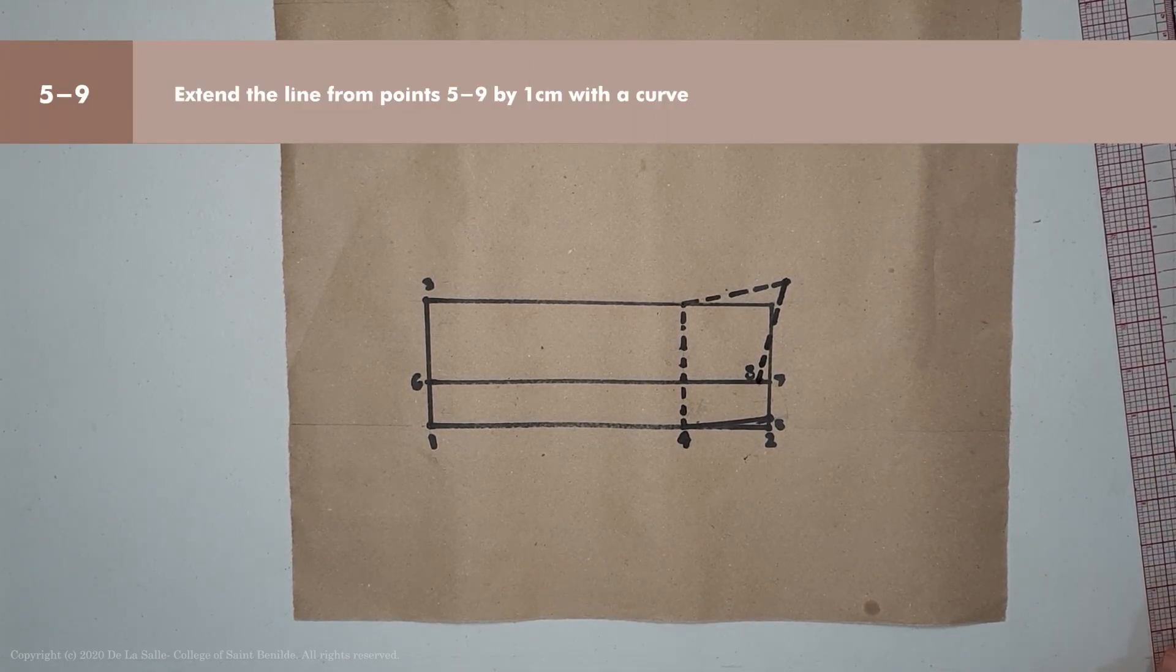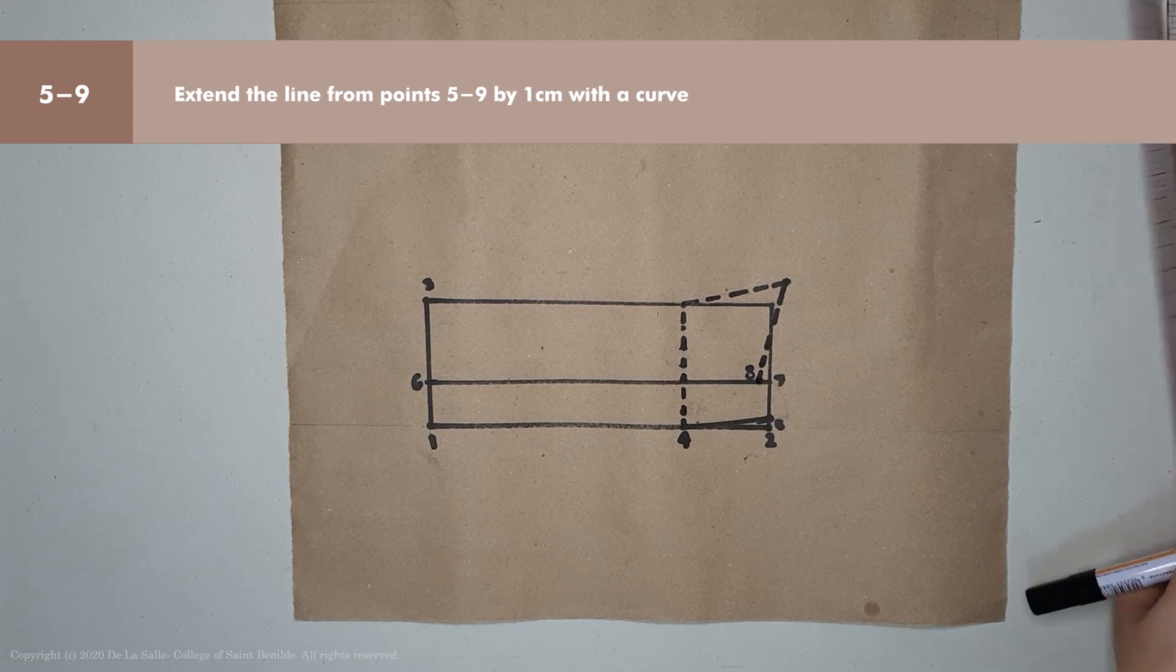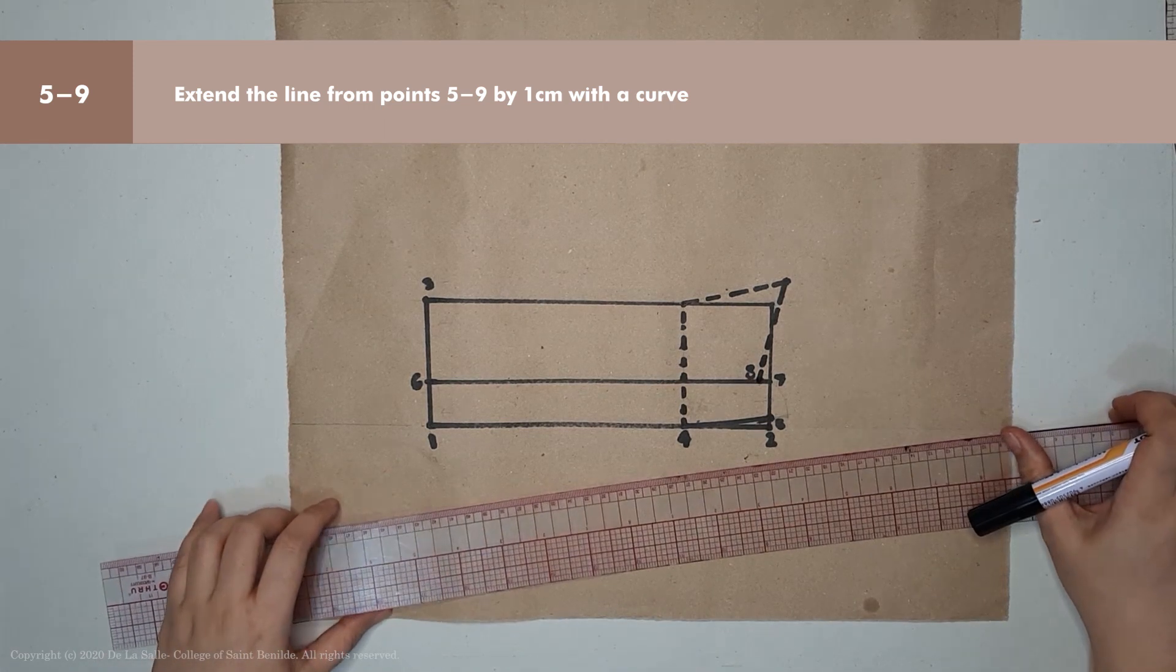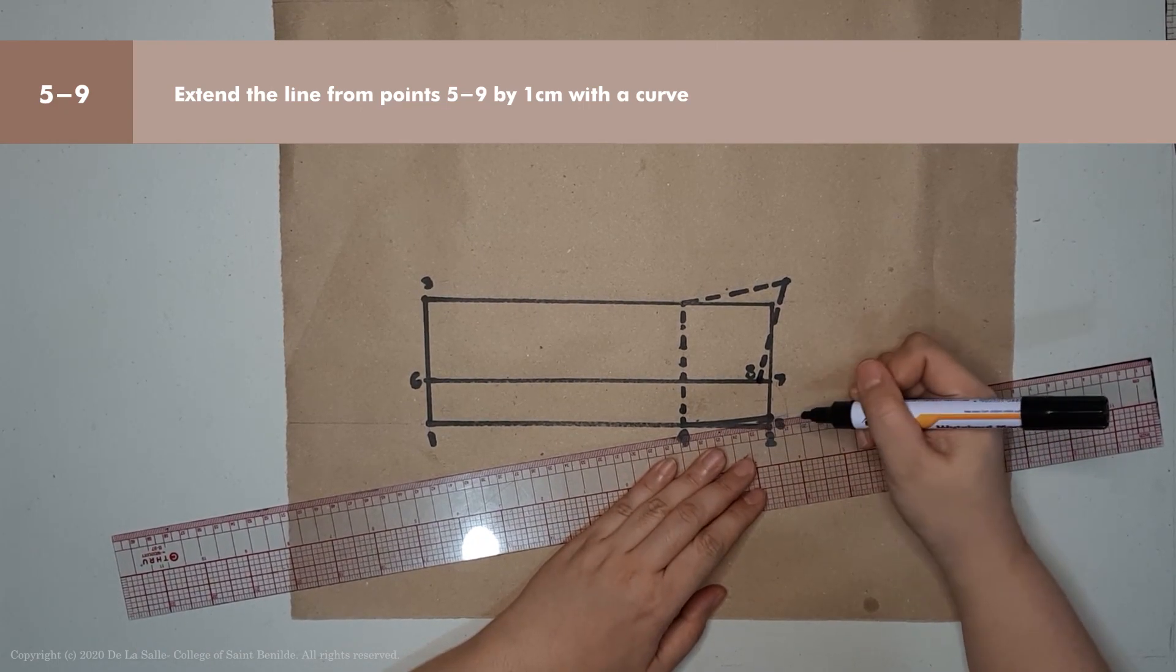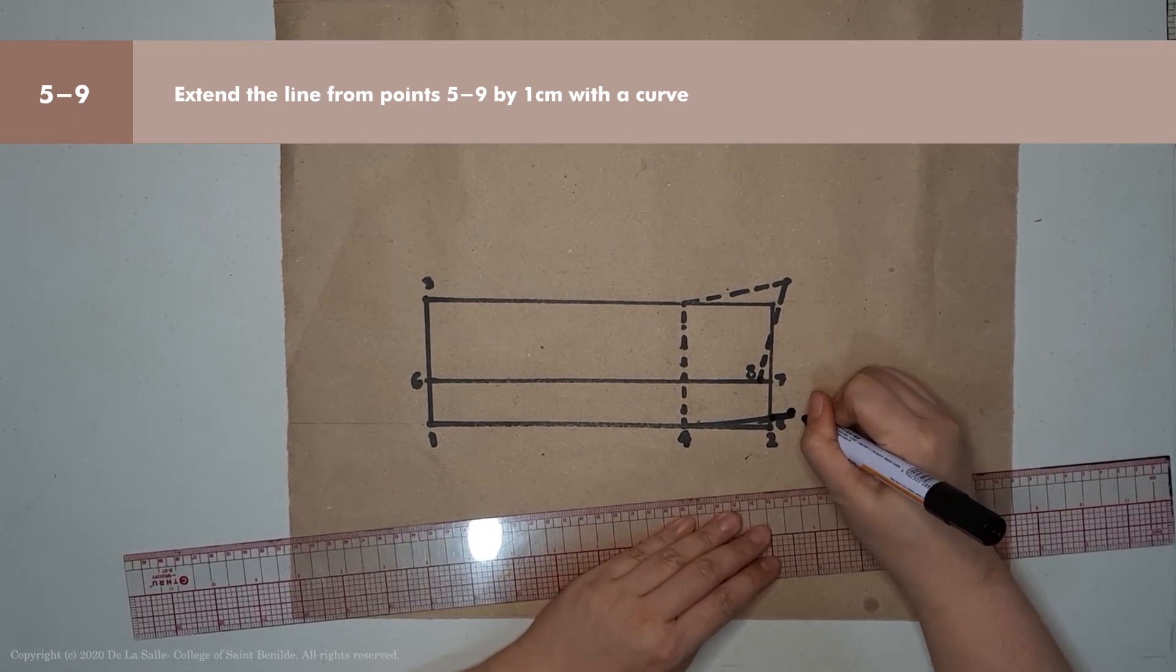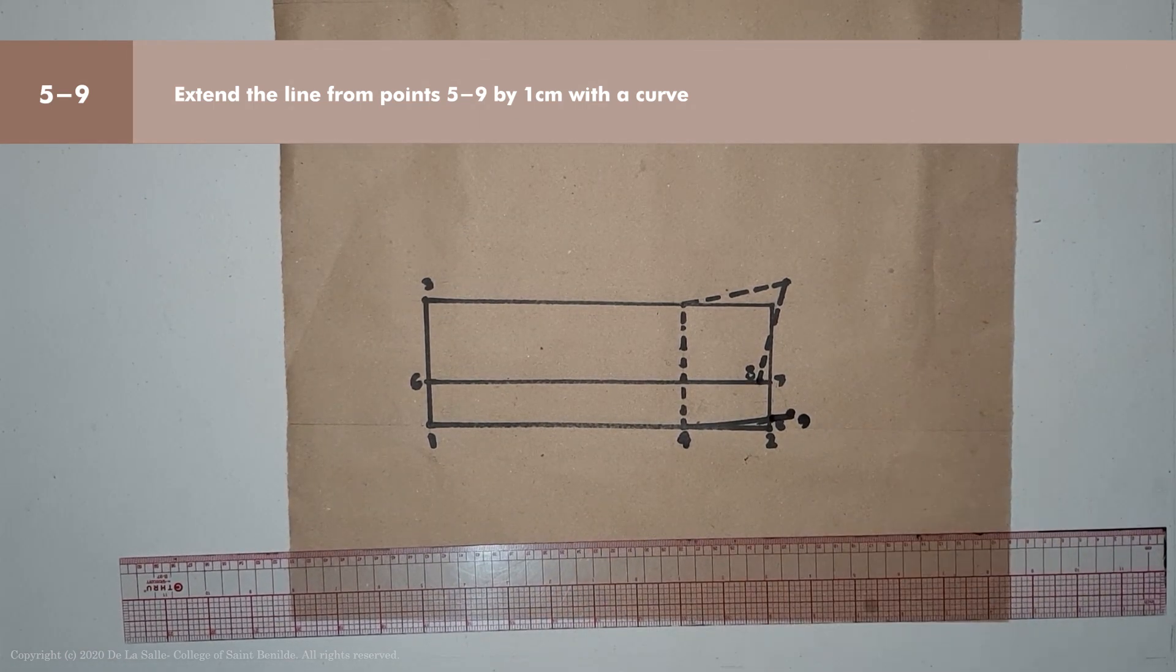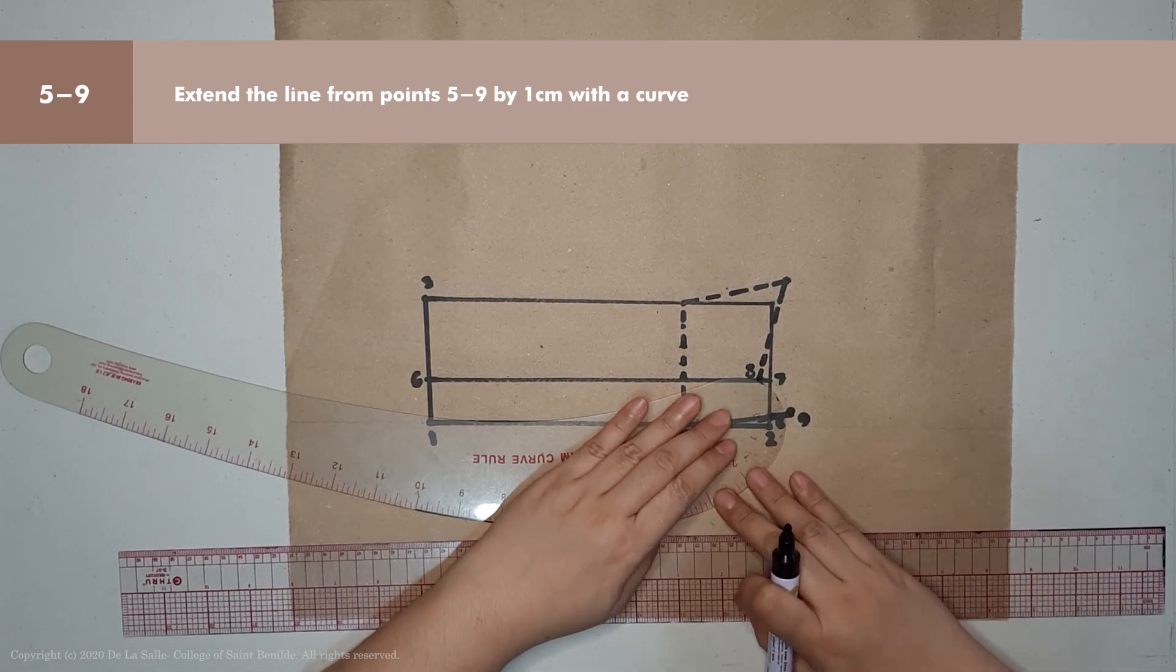Next is point 5 to 9. Extend point 5 by 1 cm and make a curve. This curve line at the bottom, extend it by 1 cm. That becomes point 9. Then connect it to point 7 with a curve using your curve ruler.